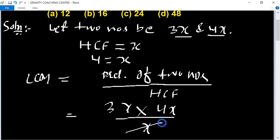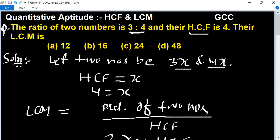x cancels, so 3 into 4 into 4 equals 48. This is the required answer, so option d is the right answer.